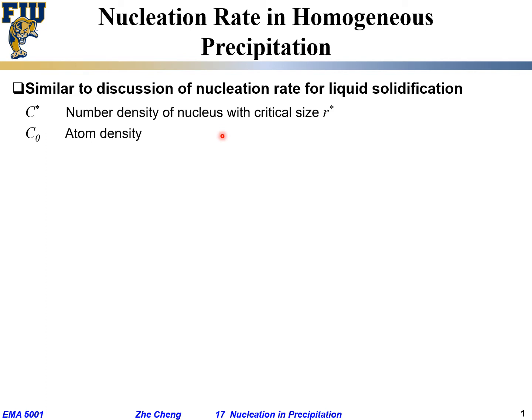That's the concentration of nucleus, and C0 is the atom density per unit volume—how many total atoms there are. And this ΔG*_hom, that's our so-called nucleation barrier, our critical nucleation energy.